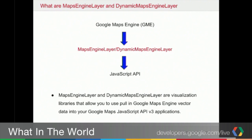So what are MEL and DMEL? Google has the excellent location data hosting service of Google Maps Engine, which you're probably familiar with, where you can upload your map data, style, and store your data in the cloud. Google also has the map making tool JavaScript API. And MEL and DMEL are essentially the link between them. Using those, you can easily put a map on your website that shows your GME content.